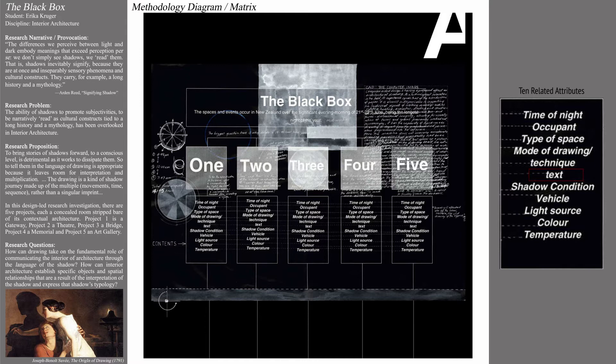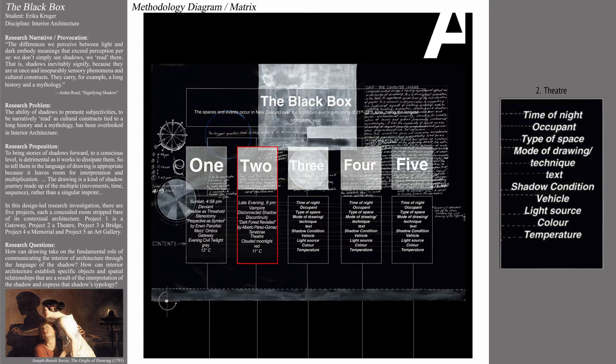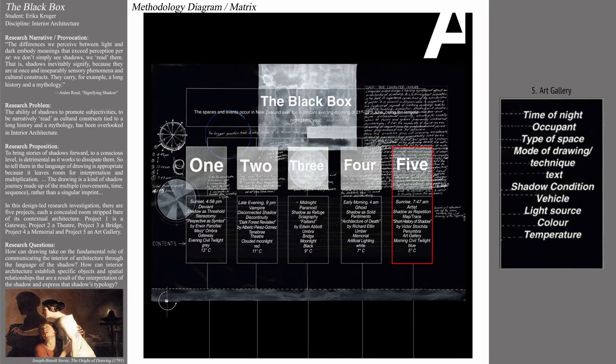For each story, the category text represented her principal theorist, and the category vehicle represented her principal architectural case study. Project one was a gateway; its fictional inhabitant was a deviant, and the time of the narrative was sunset. Project two was a theater; its fictional inhabitant was a vampire, and the time of the narrative was 9 p.m. Project three was a bridge; its fictional inhabitant was a paranoid schizophrenic, and the time of the narrative was midnight. Project four was a memorial; its fictional inhabitant was a ghost, and the time of the narrative was 4 a.m. Project five was an art gallery; its fictional inhabitant was an artist, and the time of the narrative was sunrise.